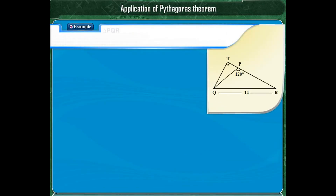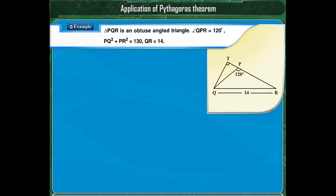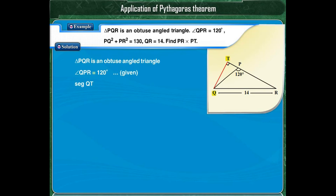Example 2: Triangle PQR is an obtuse-angled triangle. Angle QPR is equal to 120 degrees. PQ squared plus PR squared is equal to 130, and QR is equal to 14. Find PR into PT. Segment QT is perpendicular to line PR. By the property of the obtuse-angled triangle, QR squared is equal to PQ squared plus PR squared plus 2 into PR into PT.